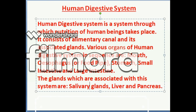We are studying today the human digestive system, which includes mouth, esophagus, stomach, small intestine, and large intestine. There are also some glands associated with this system: salivary glands, liver, and pancreas. These glands help in the digestion of food.